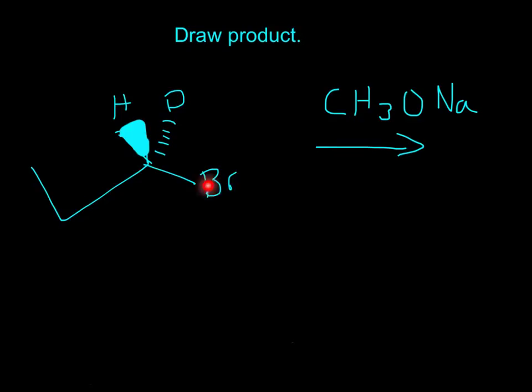So, this carbon is attached to a bromine, it's attached to a deuterium, which is an isotope of hydrogen, and it's also attached to hydrogen, and then one carbon. So, that means that this is a primary carbon.